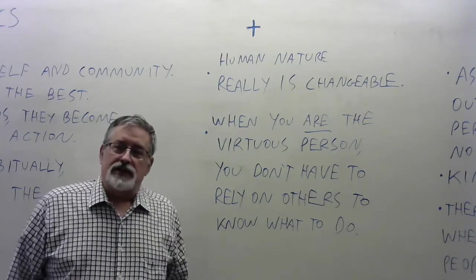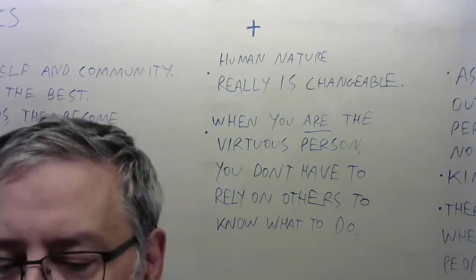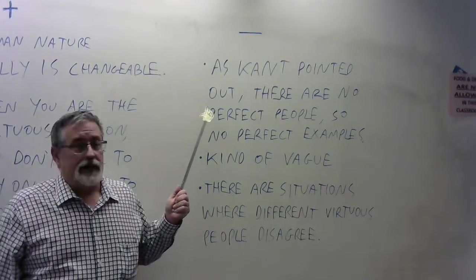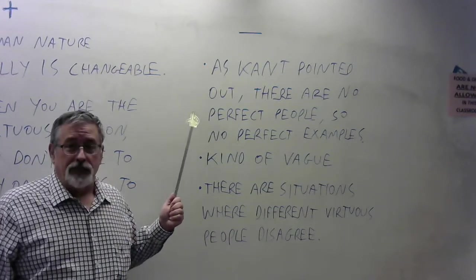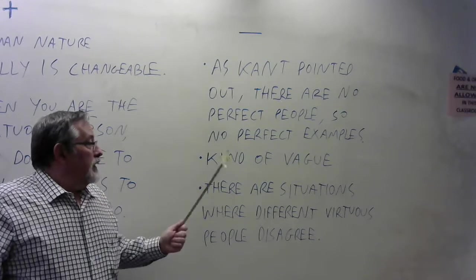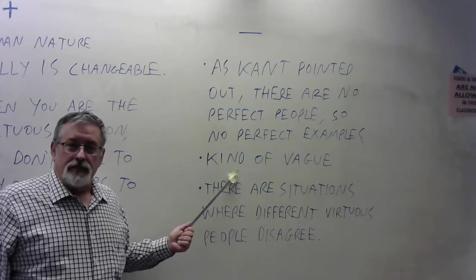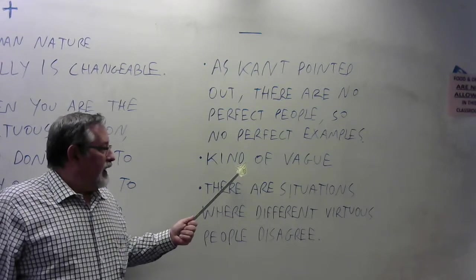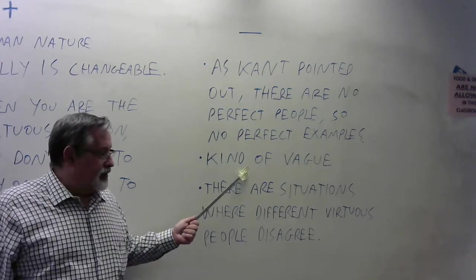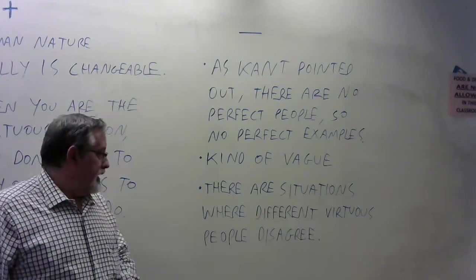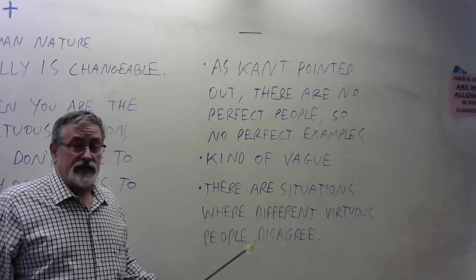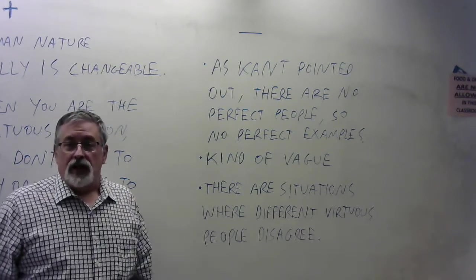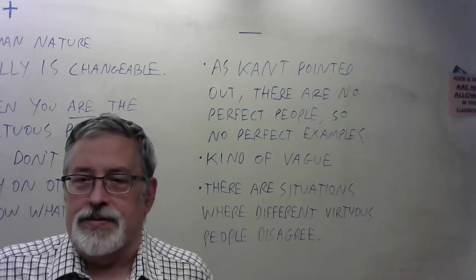What are some of the disadvantages of virtue ethics? As philosopher Immanuel Kant pointed out, there are no perfect people, so it can be very difficult to find a good example of how to do things. Another problem is that doing things the way the virtuous person does them is kind of vague — it doesn't tell us exactly what we need to do in all situations. A further difficulty is that there are situations where different people we consider virtuous might do different things, so if we want to emulate them, what are we going to do? That's the first of your three paradigms of ethics. Thank you.